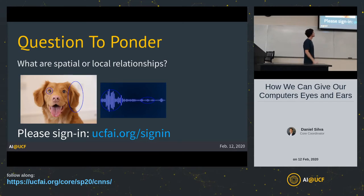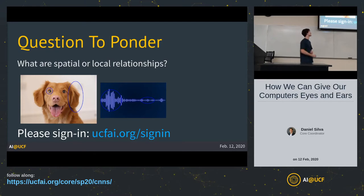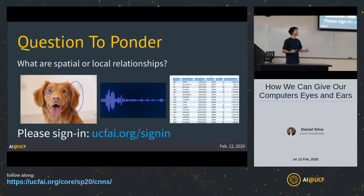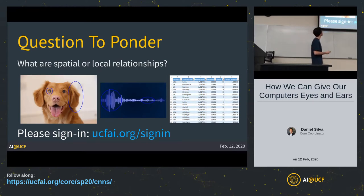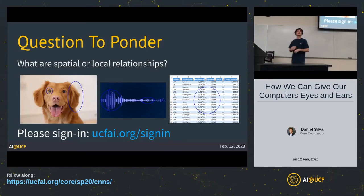Last week we were working with standard artificial neural networks, using what's called tabular data — like a housing dataset with prices and features of houses. Can we find a spatial or local correlation in tabular data? If you try to arbitrarily pick data points at different rows and columns of tabular data, you can't generate spatial relationships. Not at all.